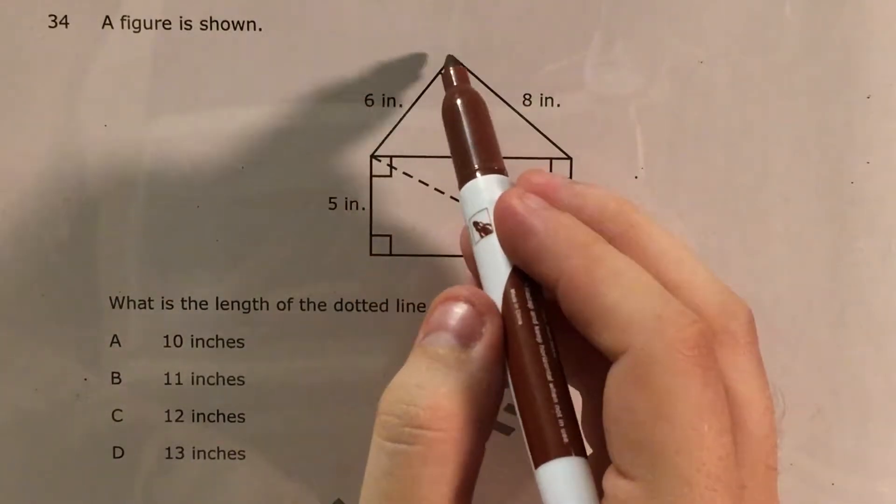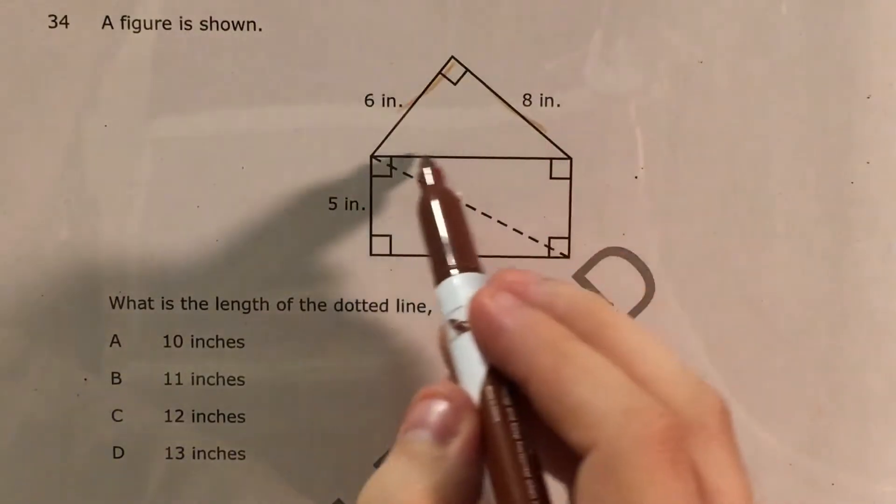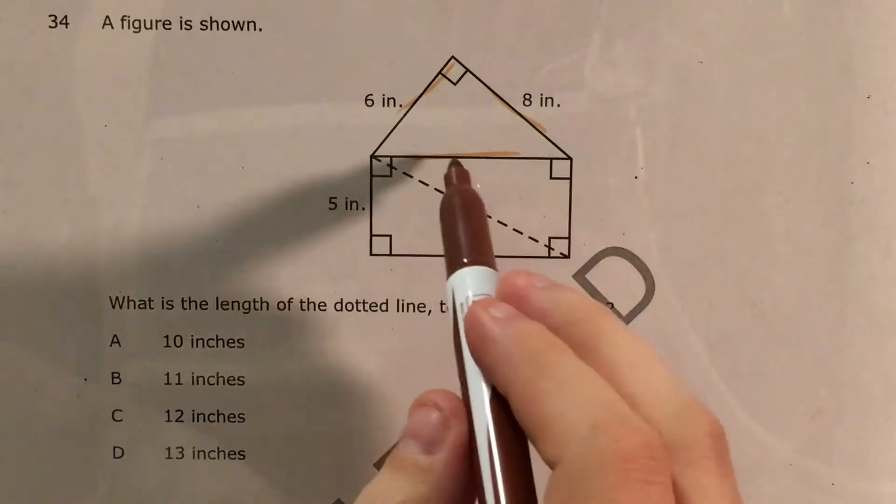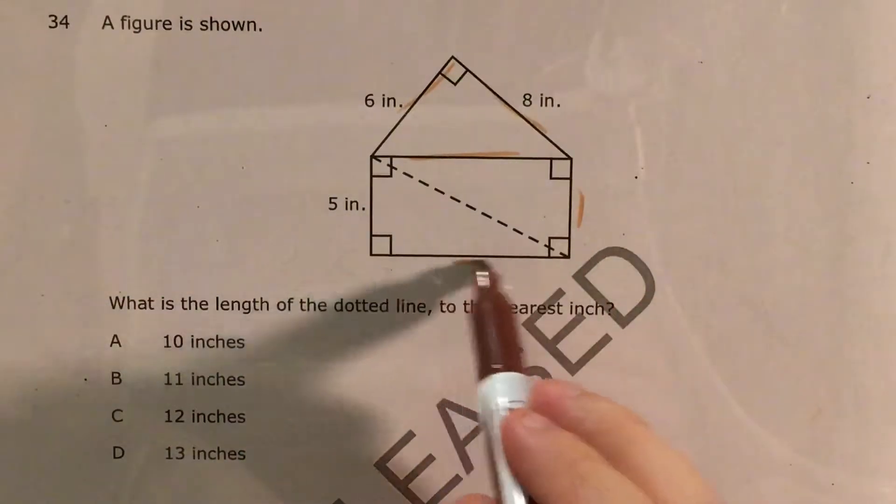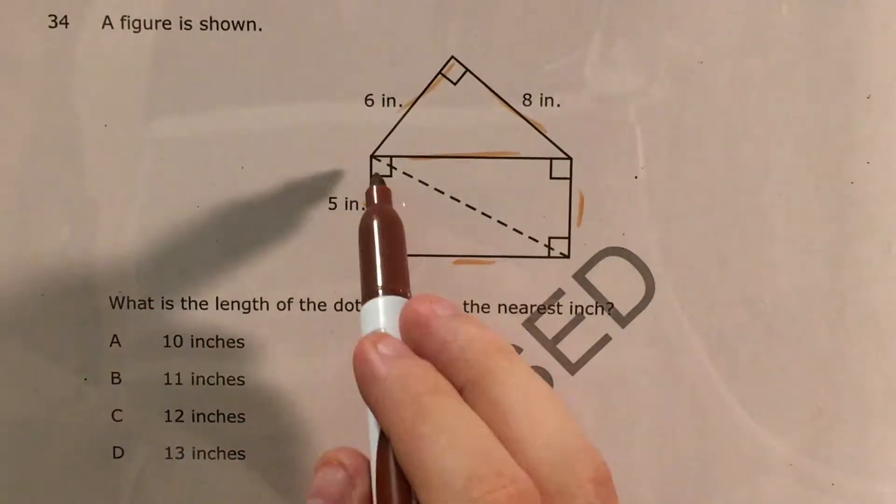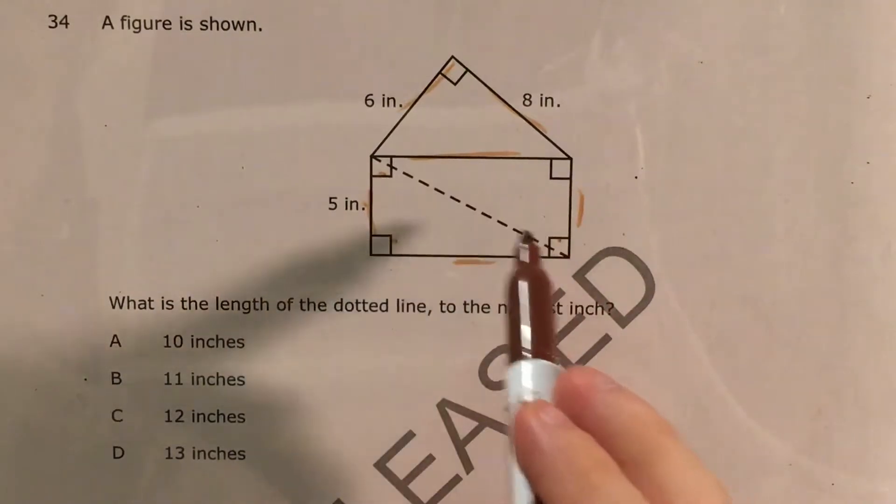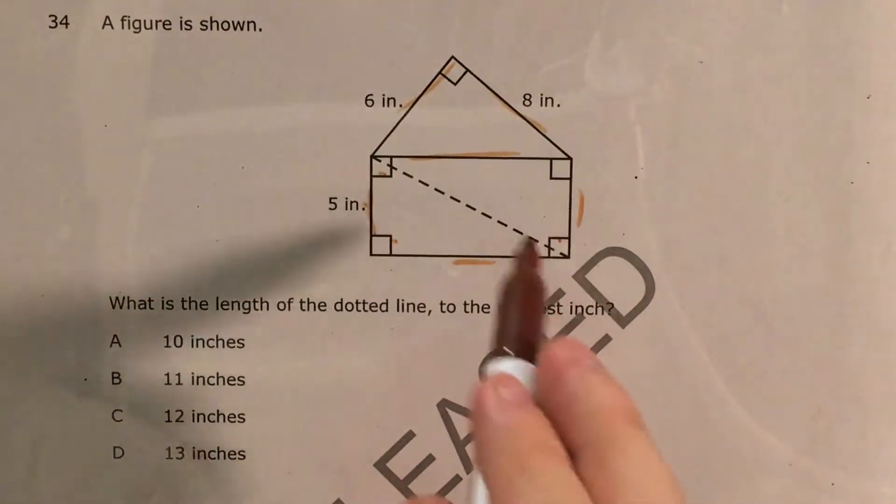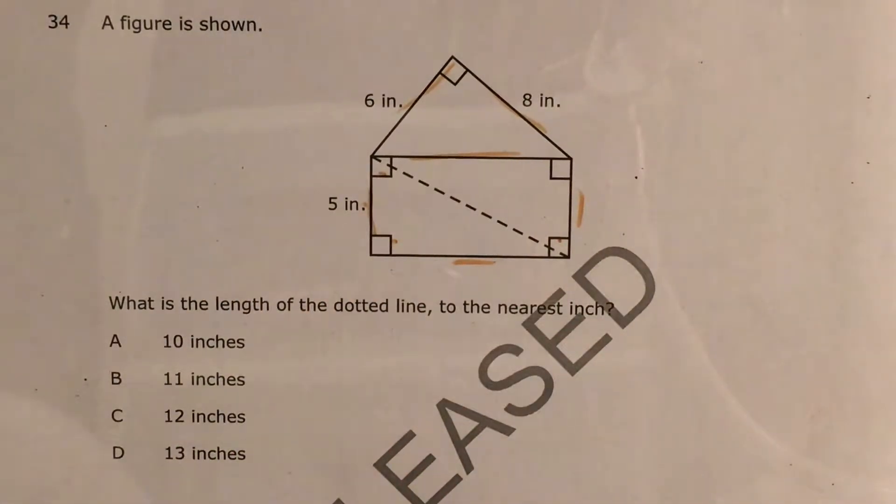We can see that we have a right triangle with this side, this side, and this side. We can also see that this side, this side, this side, and this side make a rectangle because we have four right angles, and this dotted line actually splits this rectangle into two right triangles.